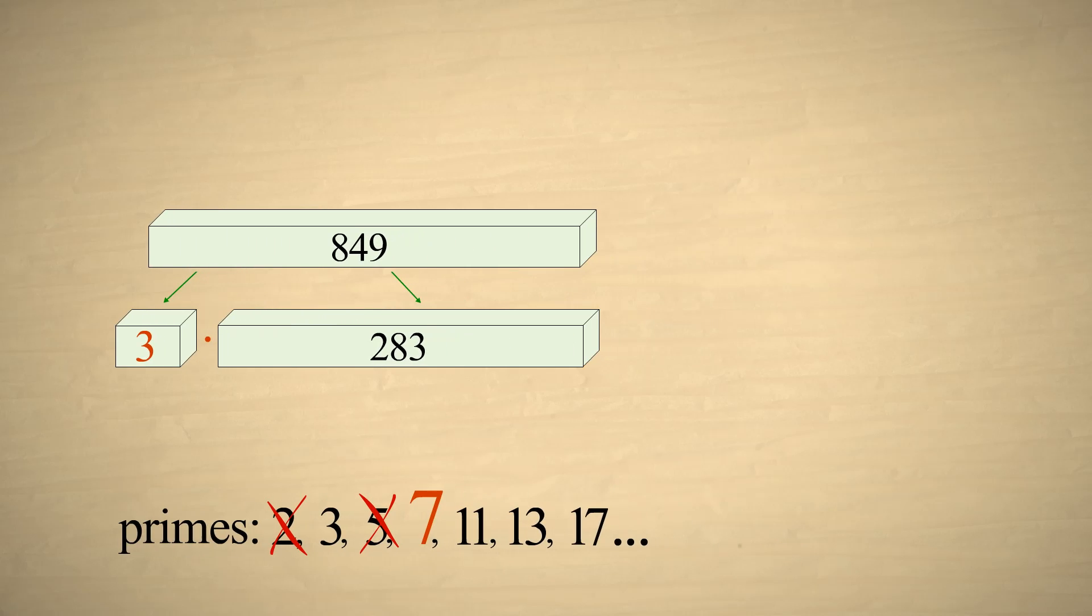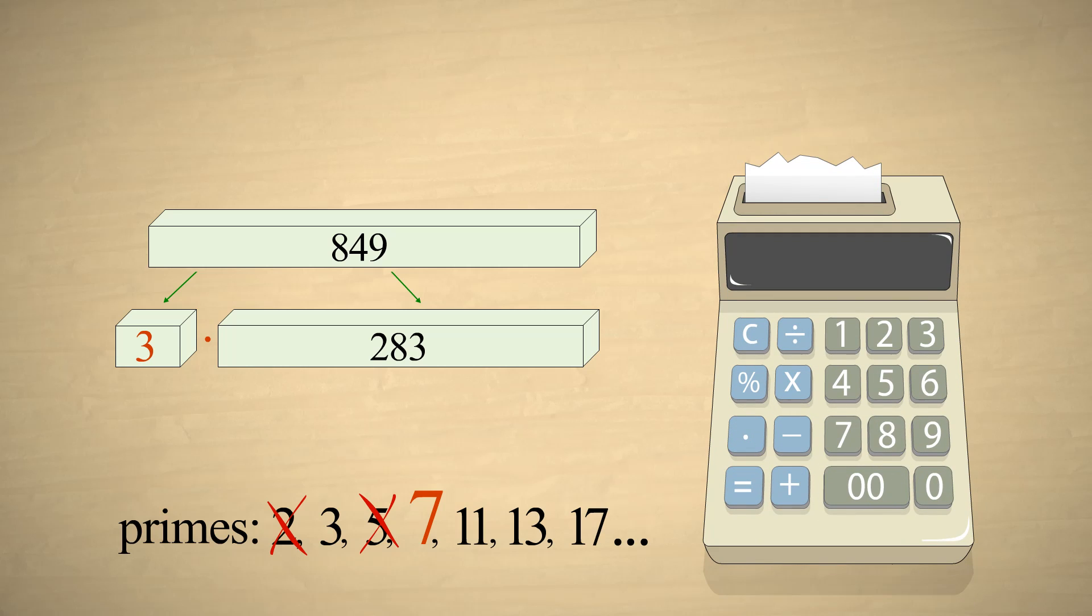Here is where a calculator comes in handy. Factors must divide evenly into the number being factored. Therefore, dividing by any valid factor must result in an integer. However, if we divide 283 by 7, we don't get an integer. So 7 is ruled out as a factor. The same is true for the next two primes, 11 and 13.